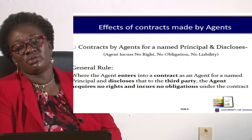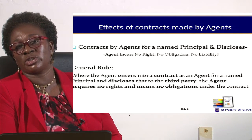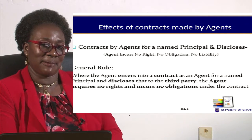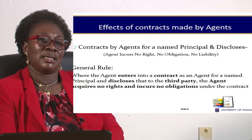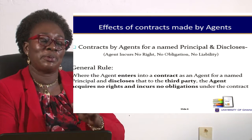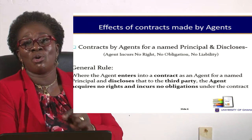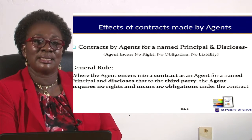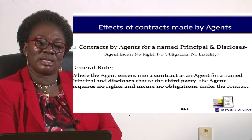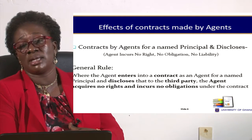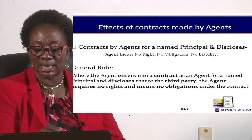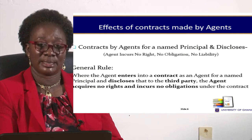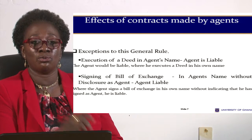In the event of a breach, the third party cannot bring an action against the agent in his personal capacity. He should bring an action against the principal as the person who authorized the agent. You can't sue the agent in his personal capacity because he will not be held liable for his actions, but the principal would.